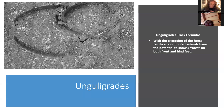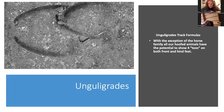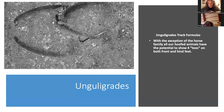Our final group is the unguligrades — hoofed animals that have gone even further forward onto their nails. The toe pad is still present but the nail forms a modified hoof wall. The underside is hollow and the outside — the ungulous — is what they walk on, which is why they're called ungulates. Most hoofed animals in Britain are even-toed ungulates with two cleats, except horses and donkeys, which walk effectively on the modified nail of just toe number three.